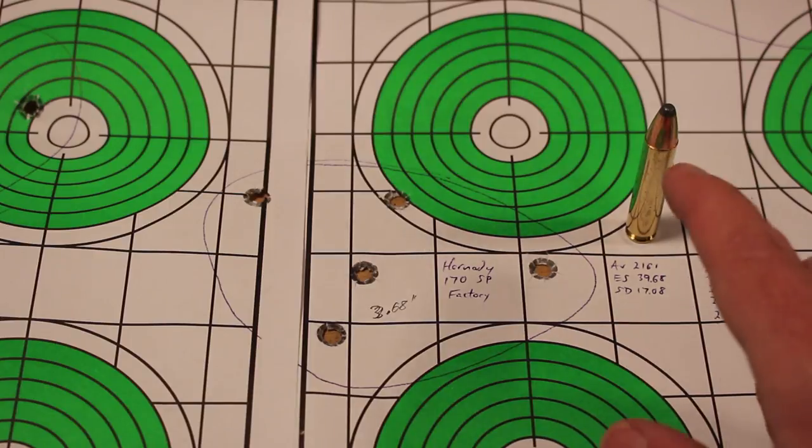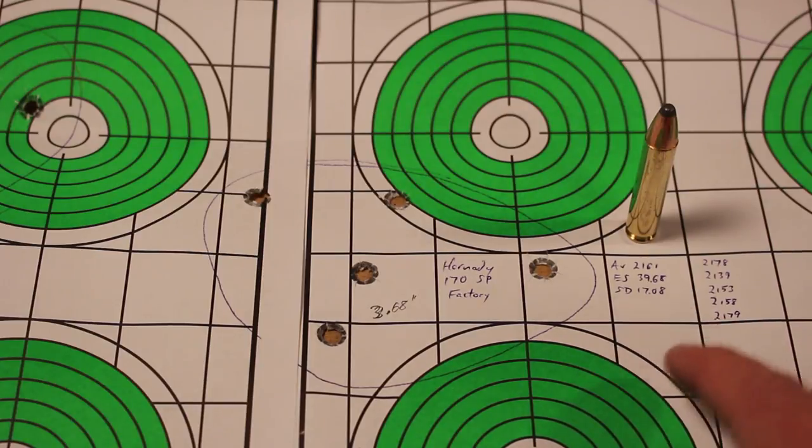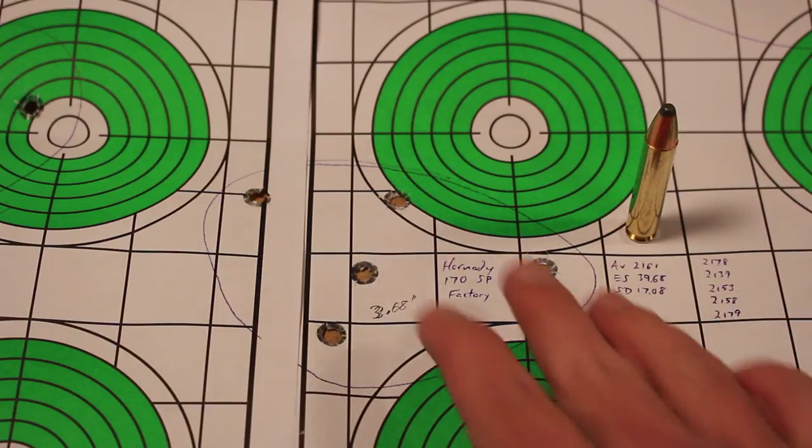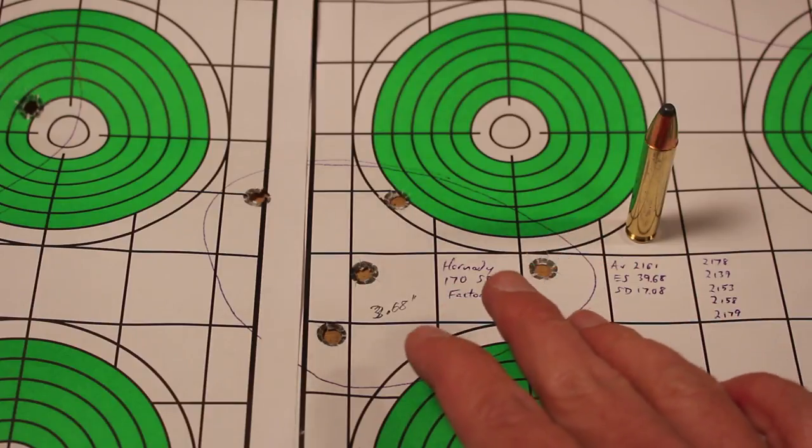Both of them have similar velocities. This one's a little bit faster. This one's moving out at 2,161 feet per second. Standard deviation of 17.08. So this is quite precise when it comes to its velocities. It's just a little bit stringy in my gun. This may change for you.